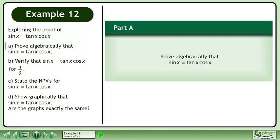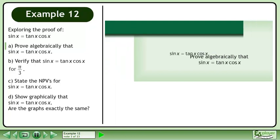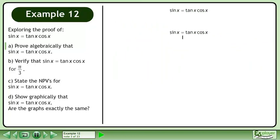Prove algebraically that sin x equals tan x times cos x. Rewrite the statement and draw a line. On the right side, tan x becomes sin x over cos x. Cancel to get sin x. The left side equals the right side, completing the proof.